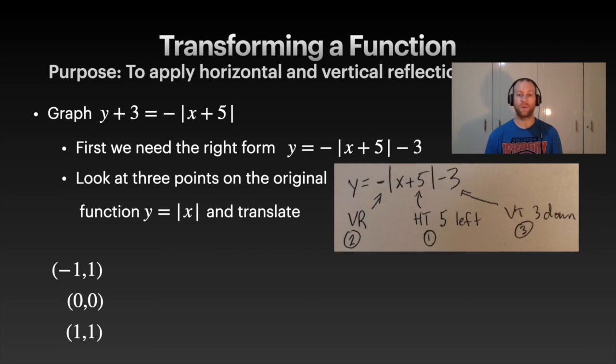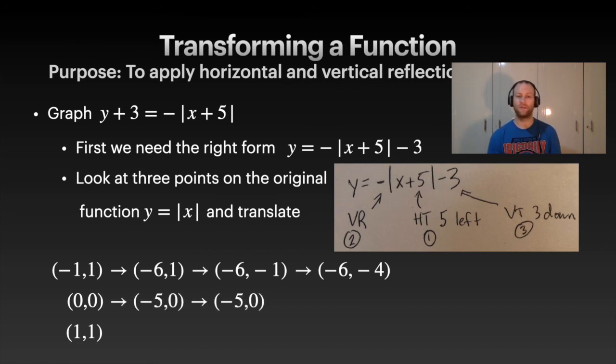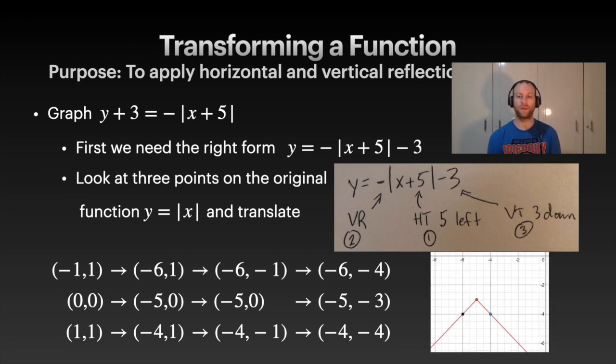We're first going to translate horizontally five to the left. Then the vertical reflection, so we take the y, make it negative. And then translate that three down. So take the y, subtract 3. We do the same thing for the other points: five to the left, vertical reflection—it's zero so there's no reflection of that point—and then five down. Same thing: five left, vertical reflection, three down. This gives us our new points. We're not done yet because it asked us to graph this. This is what the graph would look like. You just plot those points and then connect the dots. Here's our graph.